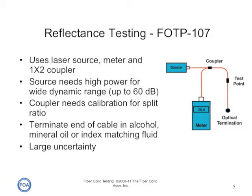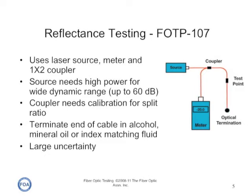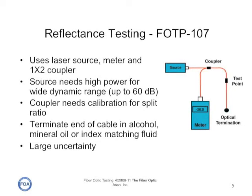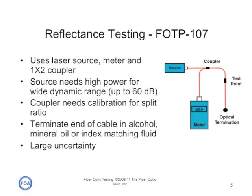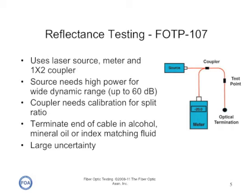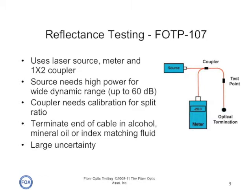One way of testing reflectance, generally used for patch cord testing, is using a laser source, a meter, and a coupler. You use a high powered source to send a signal down through the coupler to the test point where you mate the connector you want to test, and the reflected signal coming back is split into a meter which measures it. The coupler needs calibration for the split ratio, and you need both a high powered source and a very sensitive meter, because reflectance can be as little as 60 dB down from the signal — that's a part per million. This test has a fairly large uncertainty, in part because it's difficult to terminate the far end of the cable to avoid reflections that would affect the measurement.